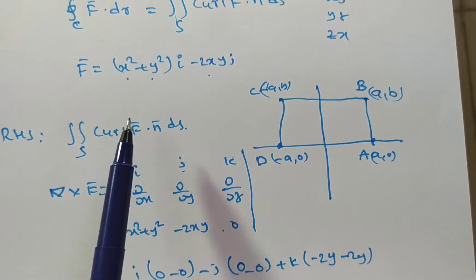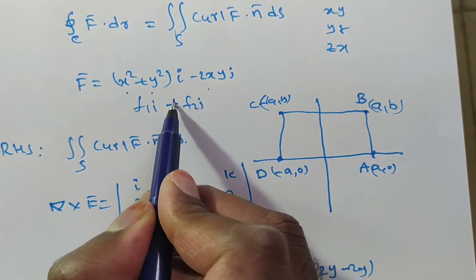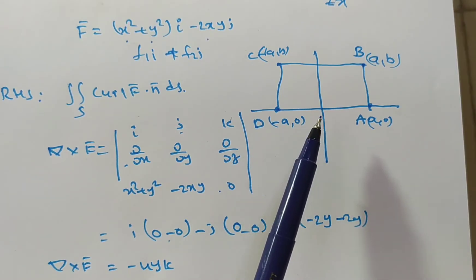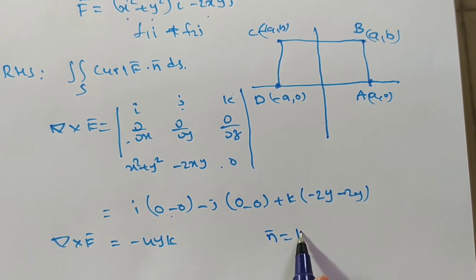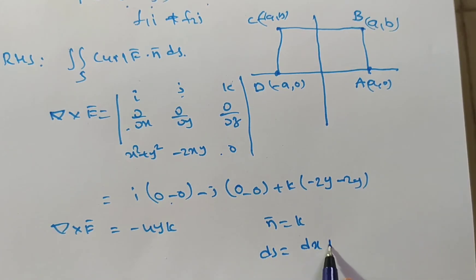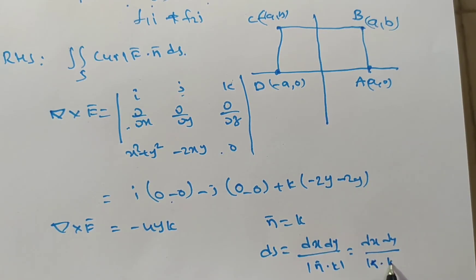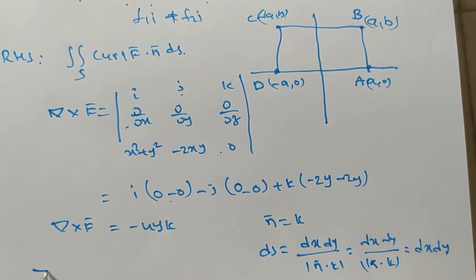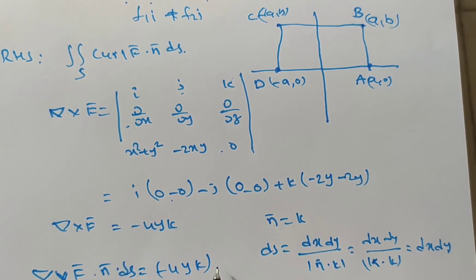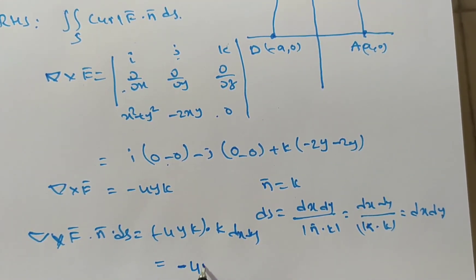Since f̄ is given in the form f₁i + f₂j with no f₃k term, the surface is in the xy-plane, meaning z = 0. Therefore n̄ = k. Also, dS on the xy-plane equals dx dy divided by |n̄·k|, and since k·k = 1, we have dS = dx dy. So curl f̄·n̄ dS = (-4yk)·(k) dx dy = -4y dx dy.